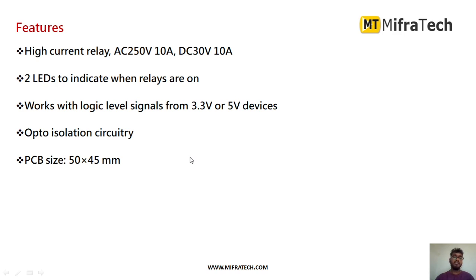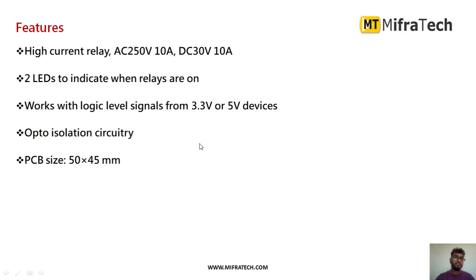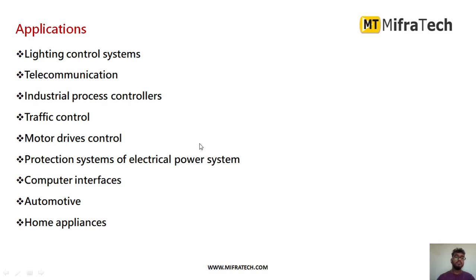The two channel relay module features a high current rating: up to AC 250V at 10A, and DC 30V at 10A. It has two LEDs to indicate when each relay is on. It works on logic levels from 3.3V to 5V; usually you provide a 5V DC supply.